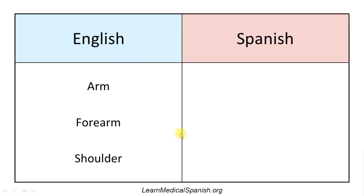Arm — we're talking about the whole upper extremity. El brazo. I'm going to say 'the arm,' so that would be el brazo. In Spanish, you want to add the word 'the' almost always when you're talking about body parts — more often than you would in English. So it's valuable to learn whether it's el or la, masculine or feminine. Arm: el brazo.